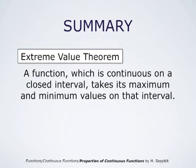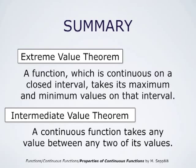To summarize, we have presented two important properties of continuous functions. The first is the extreme value theorem: a function continuous on a closed interval takes its maximum and minimum values on that interval. The second is the intermediate value theorem: a continuous function takes any value between any two of its values. Both of these results are very deep and require serious analysis along the lines of Bolzano and Weierstrass.